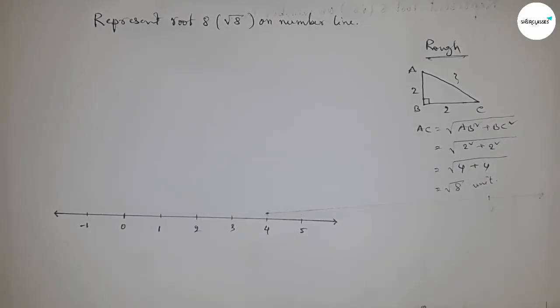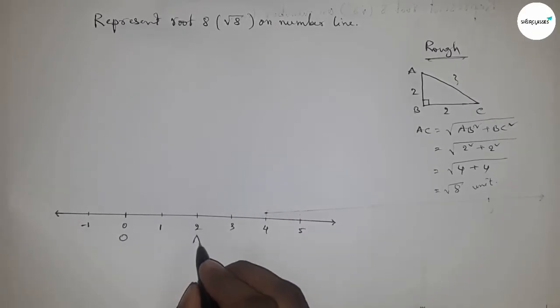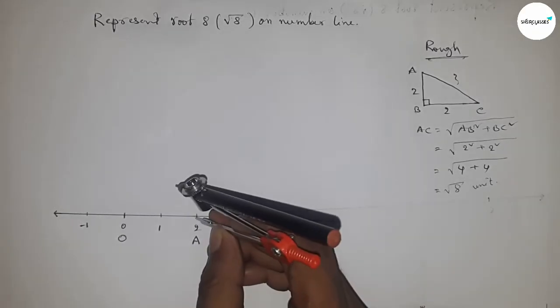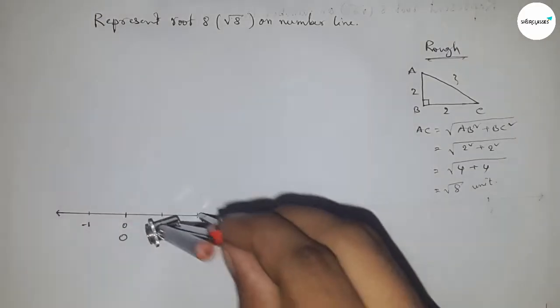Apply between zero to two. So taking O point and A point. Now, first of all, drawing a 90 degree angle on the point A.